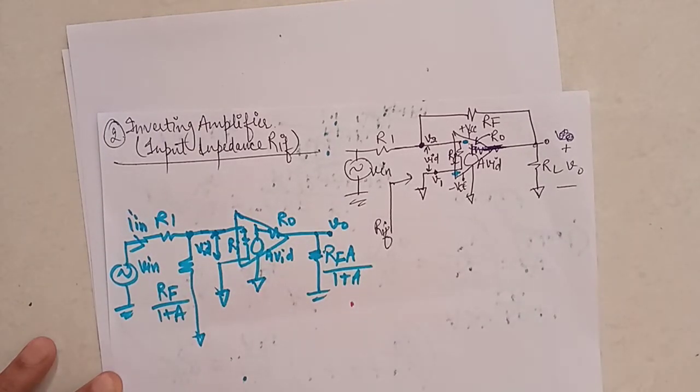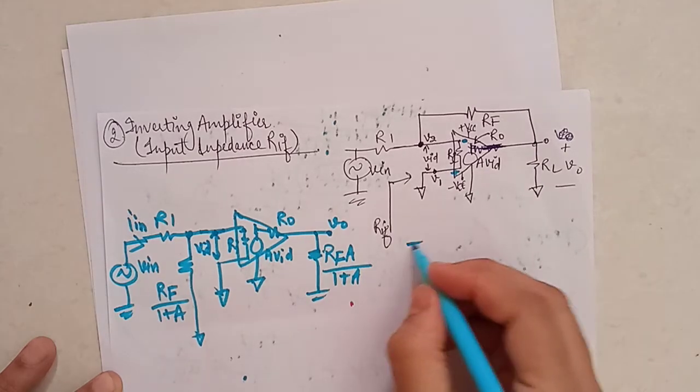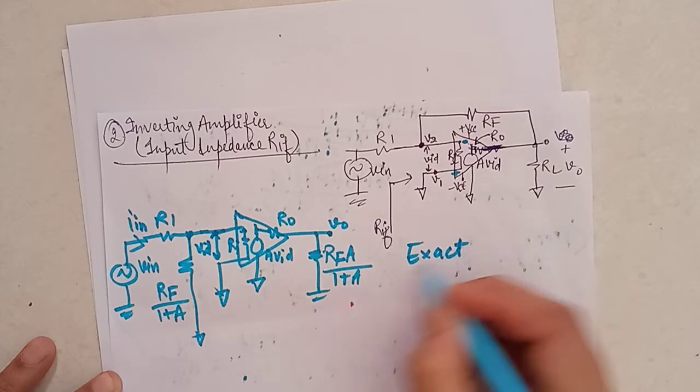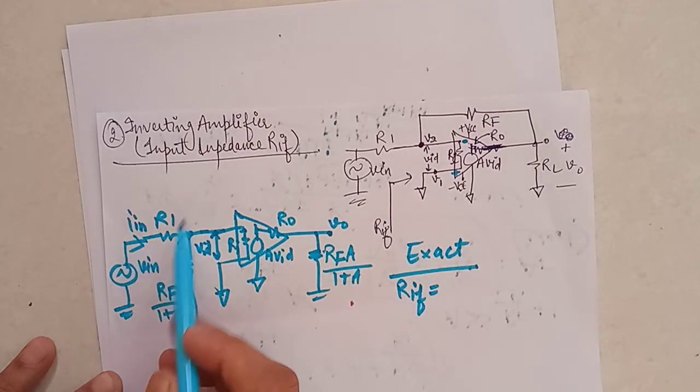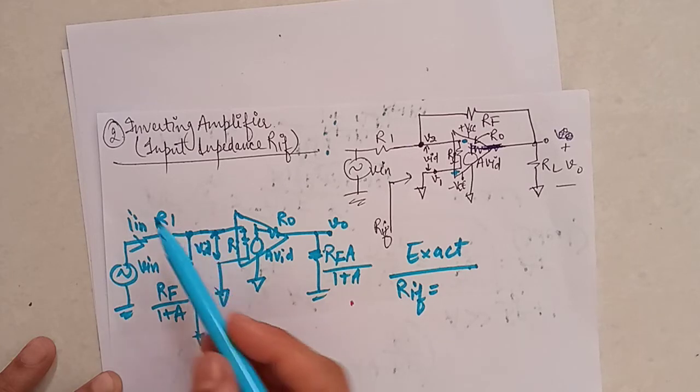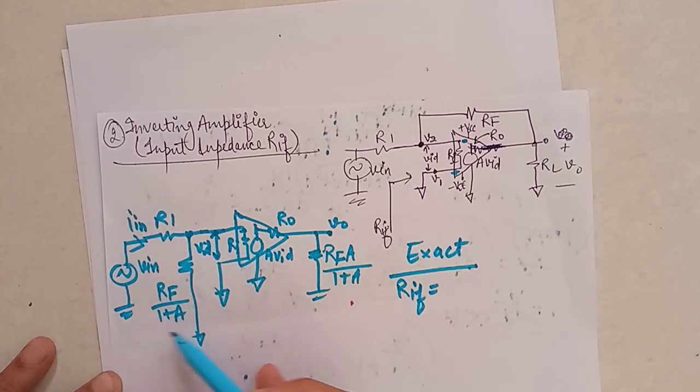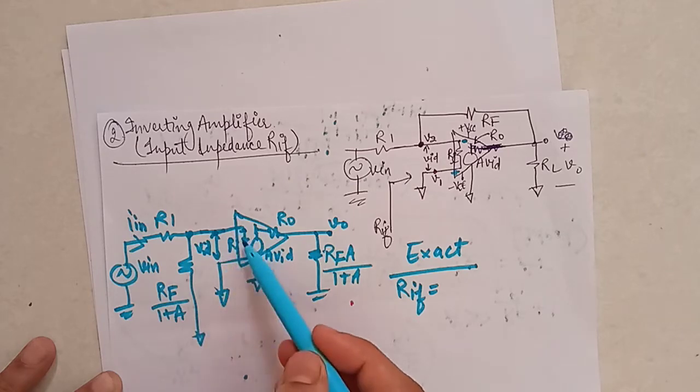So if you want to calculate the exact value of RIF, from here we can see RIF is nothing but R1 in series with the parallel combination of RF over 1 plus a and RI.